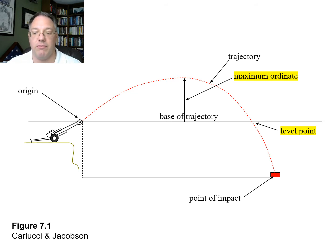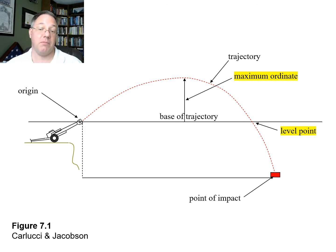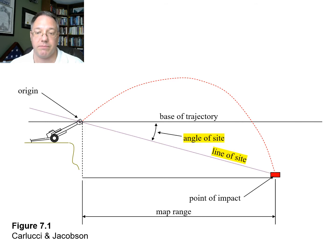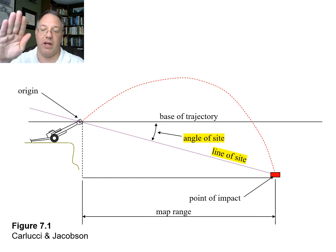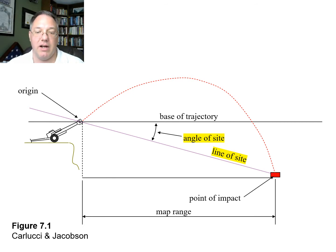After the maximum ordinate the projectile is headed downhill; before it, it was headed uphill. The level point is where the trajectory passes through the base of trajectory. If the point of impact is below that, the projectile will pass through it and continue until hitting something. Line of sight is the line from the muzzle to the target — the round is going to impact something — and the angle of sight refers to the angle between the line of sight and the level base of trajectory.